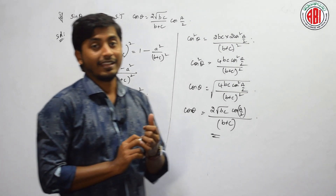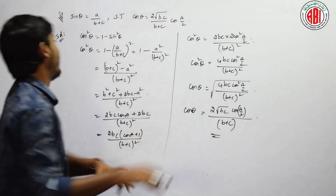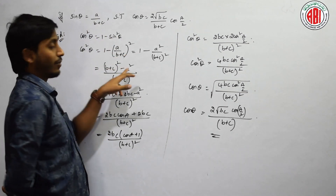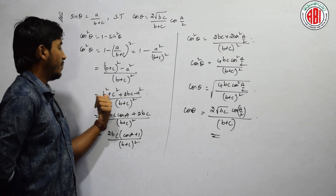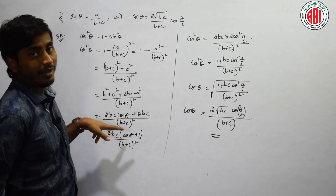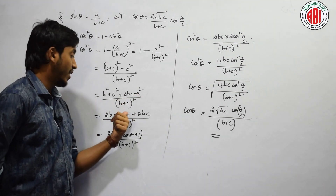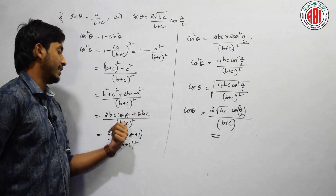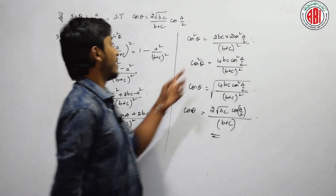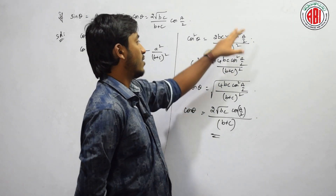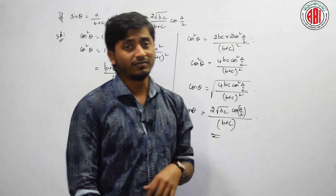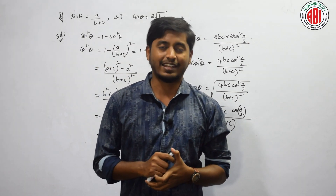To summarise: cos²(θ) = 1 - sin²(θ), sin(θ) = a/(b+c), LCM gives (b+c)² - a² in the numerator. Expanding: b² + c² - a² = 2bc·cos(A). Taking 2bc common gives (cos A + 1). Using 1 + cos A = 2cos²(A/2) gives 4bc·cos²(A/2)/(b+c)². After square root: cos(θ) = 2√(bc)·cos(A/2)/(b+c).